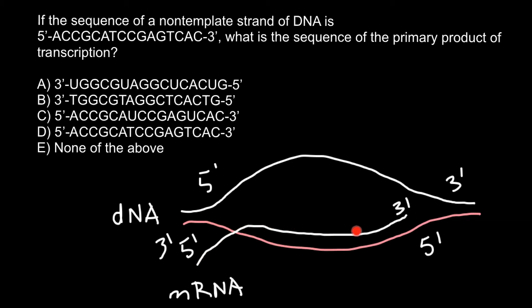This template strand is used in order to make complementary messenger RNA, and whatever sequence we find on this messenger RNA, we would also find on the other strand of the DNA. That is why this strand is called the coding strand of the DNA — coding because the code on this messenger RNA would be the same as on this strand of the DNA, with one exception.